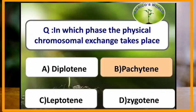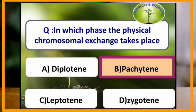In which phase does the physical chromosomal exchange take place? In the pachytene stage, the physical exchange of chromosomes takes place.